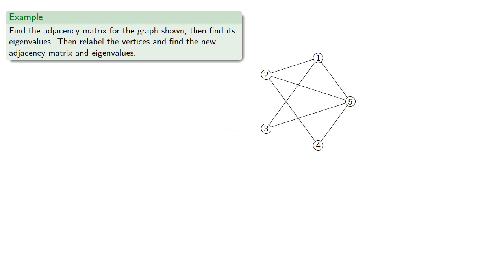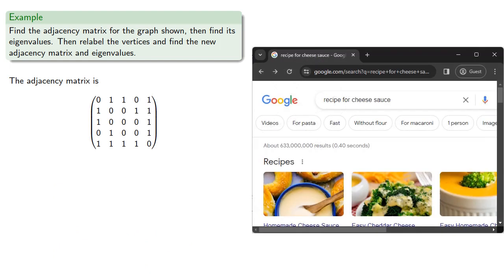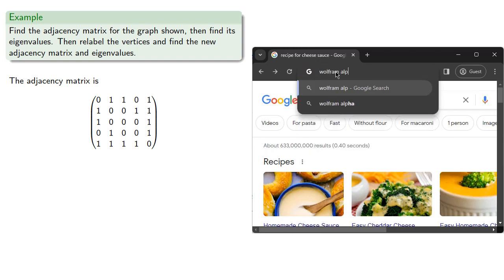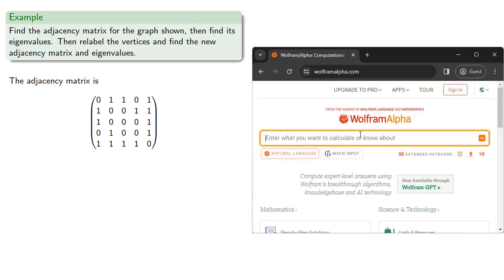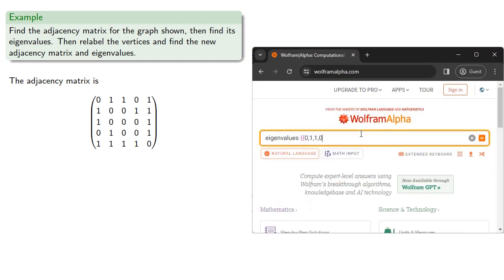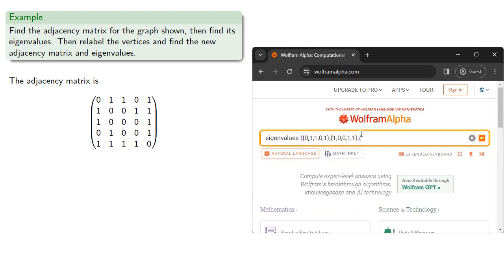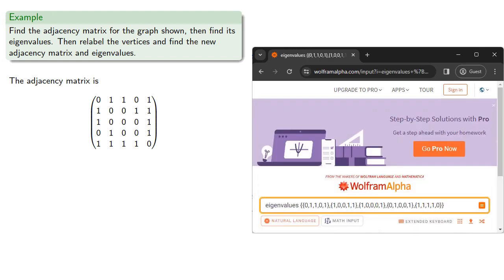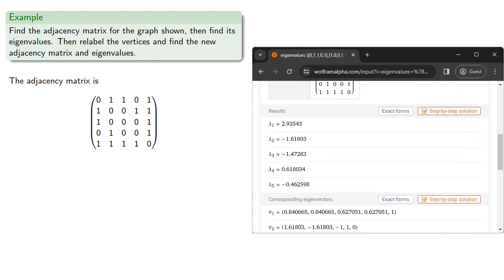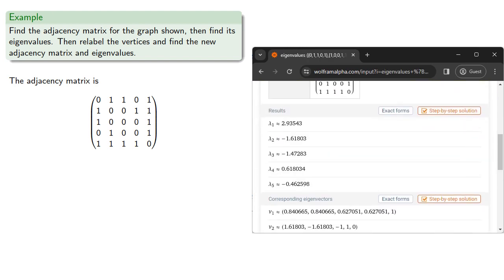So we might find the adjacency matrix for the graph and then find its eigenvalues. Our adjacency matrix will be... And we can find its eigenvalues using a complicated method of going online and using Wolfram Alpha. And this gives us our eigenvalues.